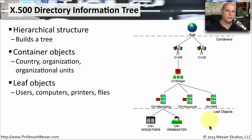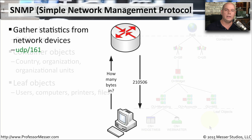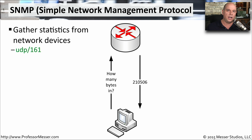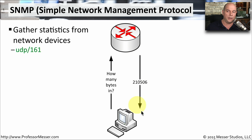LDAP provides a lot of functionality for managing many different devices in your organization. We have servers, routers, firewalls, and switches that all need to be managed, and there is a central management protocol for this called SNMP, the Simple Network Management Protocol. It allows us to gather statistics and make configuration changes to remote devices, commonly using UDP port 161. A typical SNMP query might ask how many bytes have come into a particular interface on a router, and the router responds with the requested value.